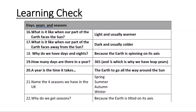A learning check, in the order that we looked at them. We've seen that there are 365 and one quarter days in a year, and that a year is the time it takes to go all the way around the Sun. We've named the four seasons in the UK and explained why we have seasons. We've explained why we have days and nights, and what the planet is like when it faces away from or towards the Sun.